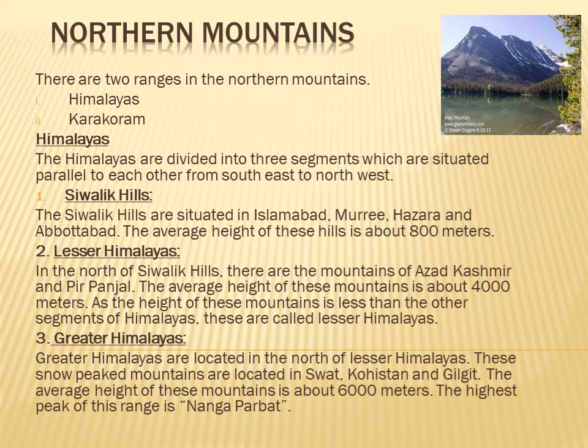The Himalayas are divided into three segments situated parallel to each other - southeast and northeast parallel. Number one: Sivalik Hills. The Sivalik Hills are situated in Islamabad, Murree, Hazara and Abbottabad. The average height of these hills is about 800 meters.